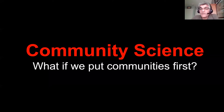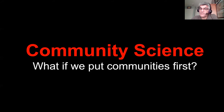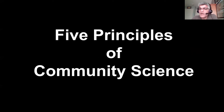Community science is when scientists and community leaders work together to use science and the processes of science to advance one or more community priorities. It's a deep kind of collaboration and there are some principles that can help guide that collaboration and make it more successful. I'm going to share some of those principles along with examples from Thriving Earth Exchange projects that illustrate those principles.